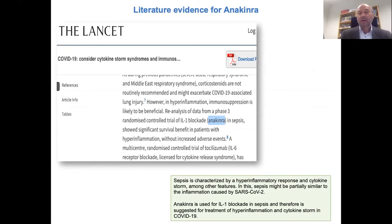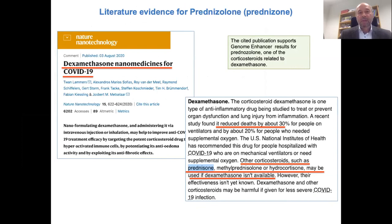Anakinra is also shown to be effective for sepsis and can be used for COVID-19. As for prednisolone, interestingly dexamethasone — another drug quite similar — is already FDA approved, and there is also literature showing prednisolone can be used as well. So these findings make sense.